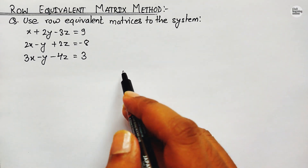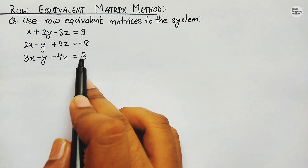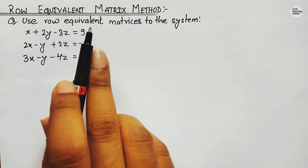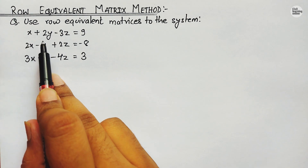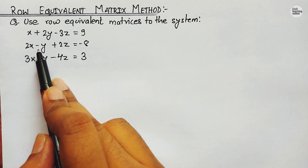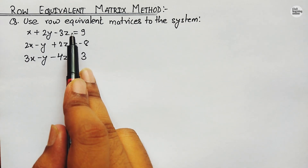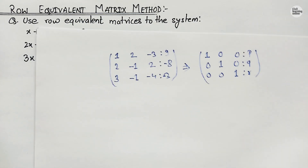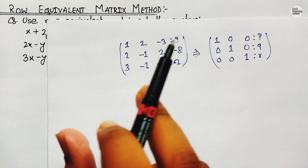Let's begin the solution of this problem. Here we are asked to use Row Equivalent Matrices to solve the system of equations, and we are provided with three equations. Using these equations in the Row Equivalent Matrix Method, we are going to form an augmented matrix. The augmented matrix is composed of the coefficients of the variables: the coefficients of x are 1, 2, -3; 2, -1, 2; and 3, -1, -4. We put two dots in place of 'equals to', and the right-hand side values are 9, -8, and 3.